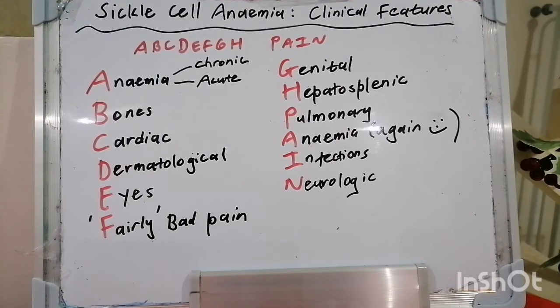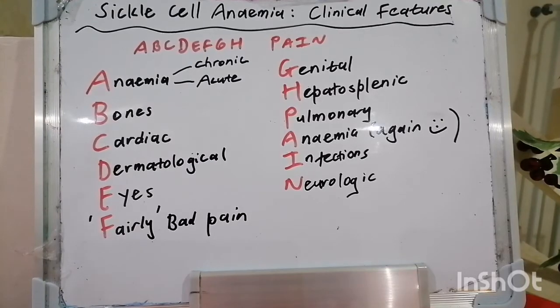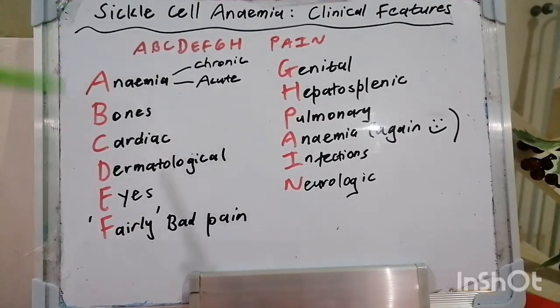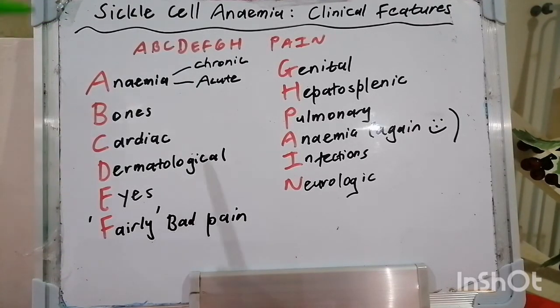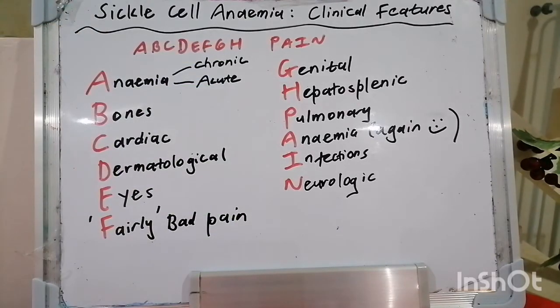So guys, this was a mouthful, but God bless you. Thank you for joining me on our 70th mnemonic video, looking at the clinical features of sickle cell anemia — A, B, C, D, E, F, G, H pain. Have a lovely day.